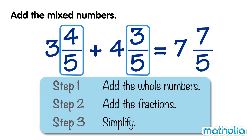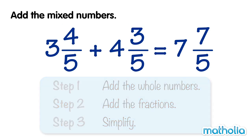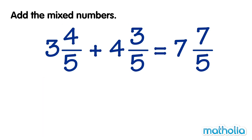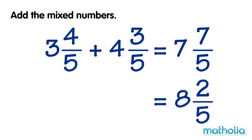Finally, we simplify. 7 fifths is an improper fraction. We can express it as the mixed number 1 and 2 fifths. Add the 1 to the 7 to give a whole part of 8 and a fraction part of 2 fifths. So 3 and 4 fifths plus 4 and 3 fifths equals 8 and 2 fifths.